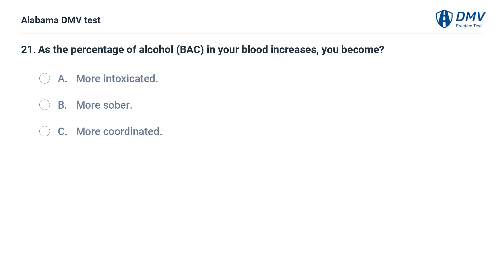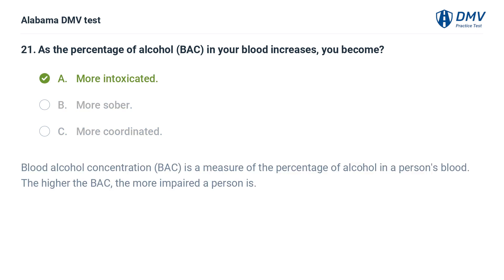As the percentage of alcohol in your blood increases, you become: A. More intoxicated. B. More sober. C. More coordinated. Correct answer: A. Blood alcohol concentration (BAC) is a measure of the percentage of alcohol in a person's blood. The higher the BAC, the more impaired a person is.